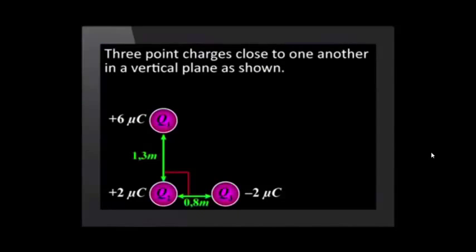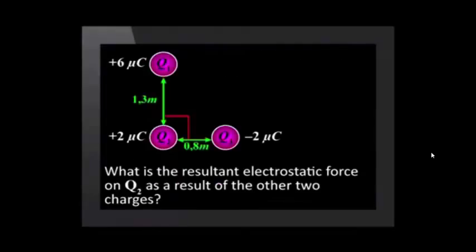There are quite a lot of calculations involved in a question of this nature. Try this one on your own. Three point charges are placed in close proximity to one another in a vertical plane. The charges and distances between them are shown here. What is the resultant electrostatic force on Q2 as a result of the other two charges?